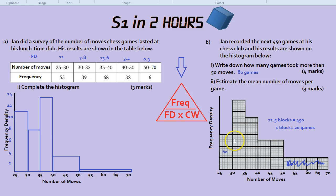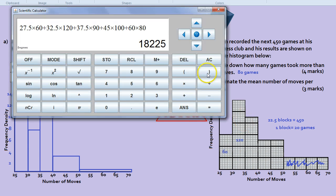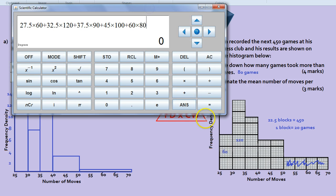30 to 35 looks like six blocks. So that would be 120 games. And et cetera. So carrying on the calculations, you would get your calculator. And you would do, actually I had it all set up there. There you go. Look, 27.5 times 60. 32.5 times 120, et cetera. And it's all done out there.